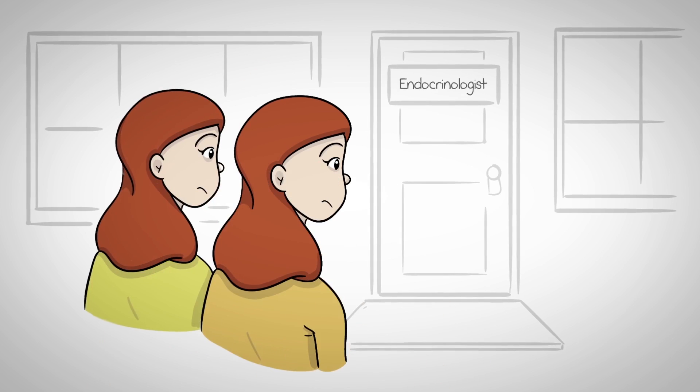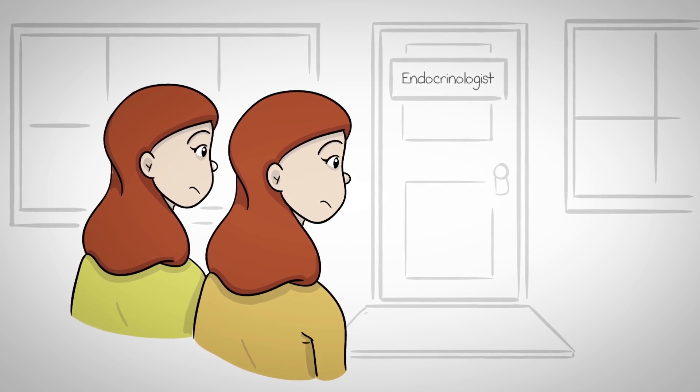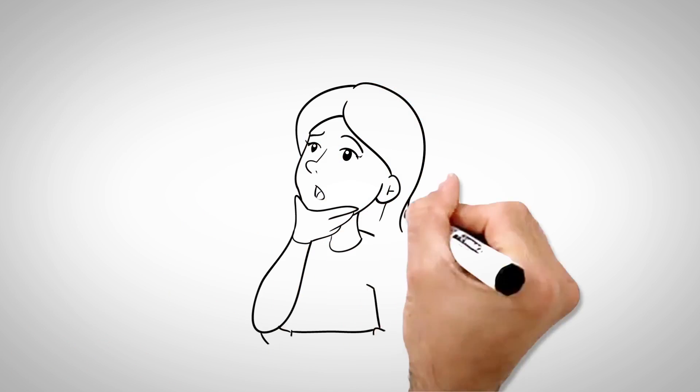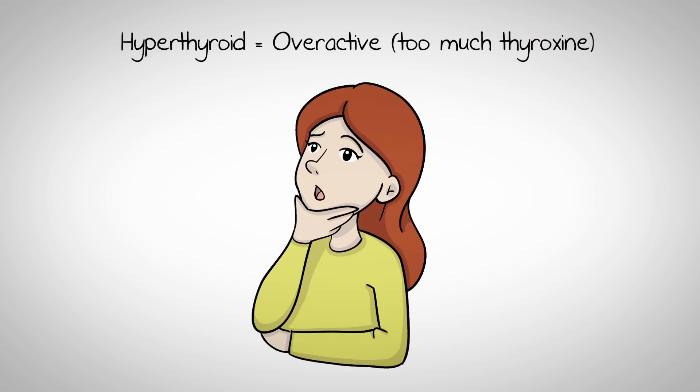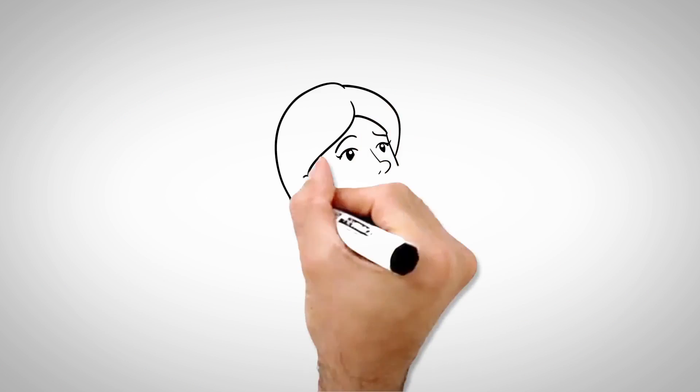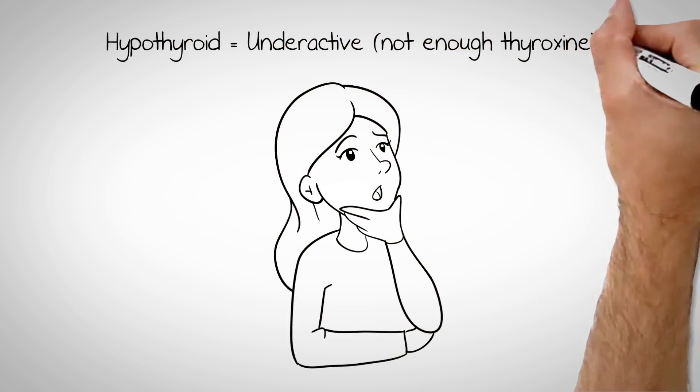It turns out that Kathy is hyperthyroid, which means her thyroid is putting out too much thyroxine. Carrie, on the other hand, is hypothyroid, so her thyroid isn't making enough thyroxine.